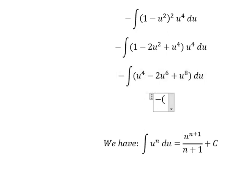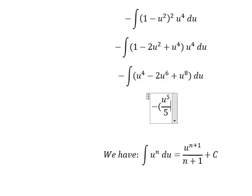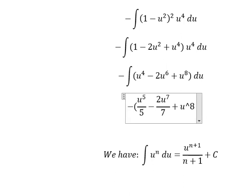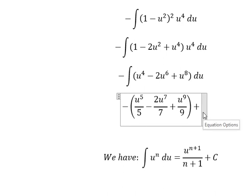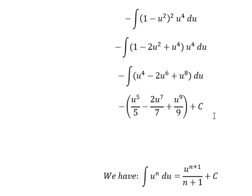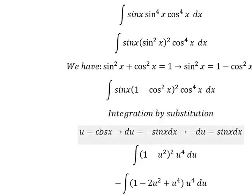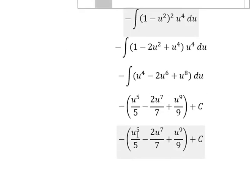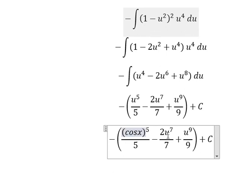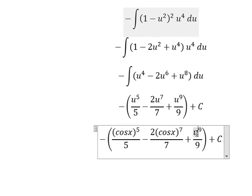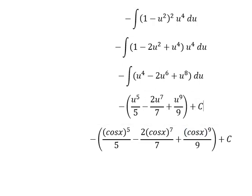The first term, that is u to the power of 5 over 5. The next one, that is u to the power of 7 over 7. The next one, that is u to the power of 9 over 9. And u is cosine x. This is the end, thank you for watching.